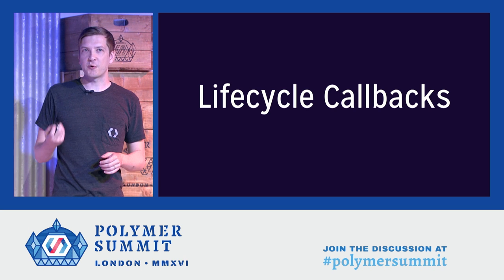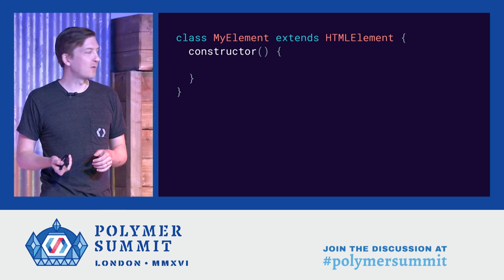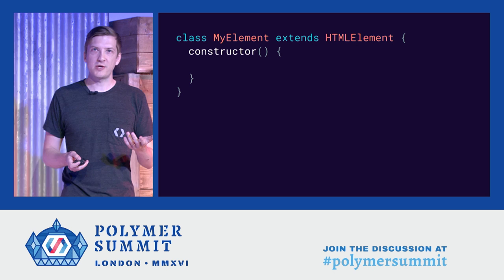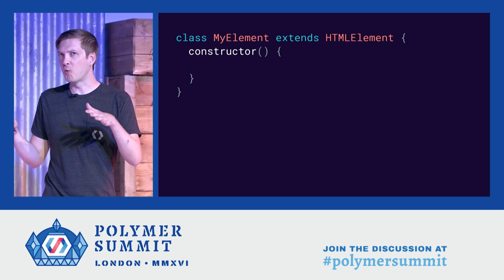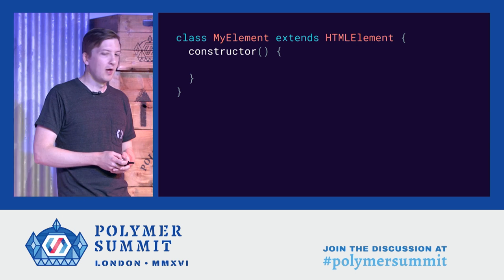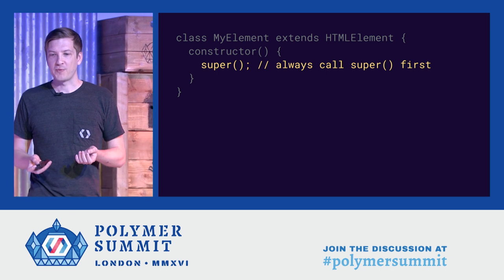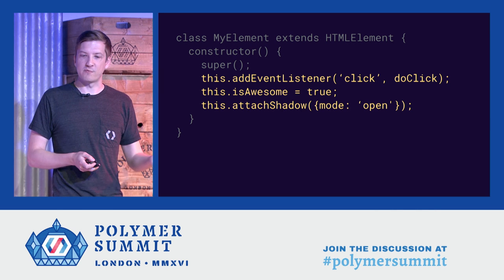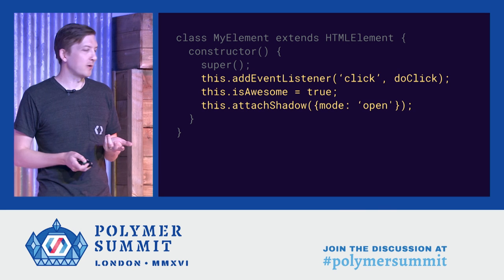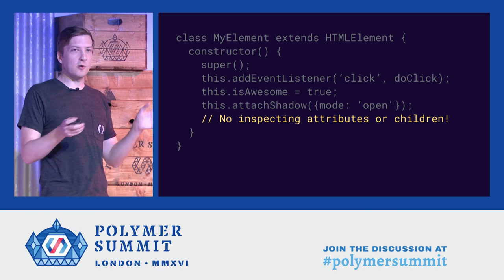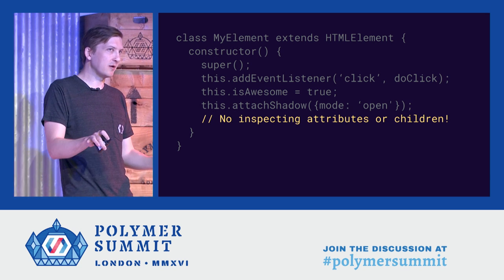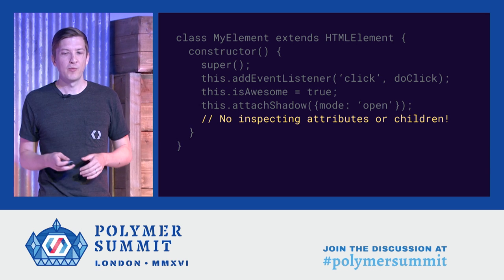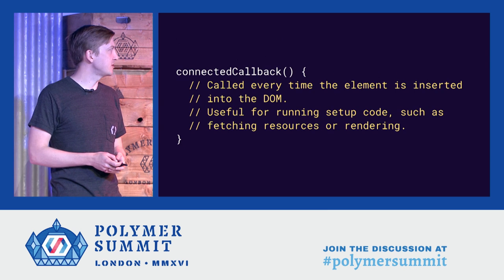Once it's created an instance, it starts triggering the lifecycle callbacks. The first is the constructor — in V0 this was the created callback, but in V1 it's now a regular ES6 class constructor. The first thing you always want to do inside the constructor is call super, especially important if your custom element extends another custom element. The constructor is a great place to set up event listeners, create initial state, and attach a shadow root. However, you cannot inspect attributes or children inside the constructor — they might not have upgraded yet, so you want to defer that work to the connected callback.